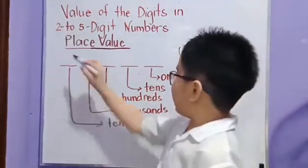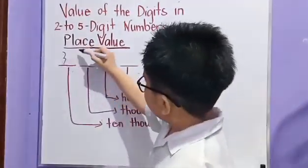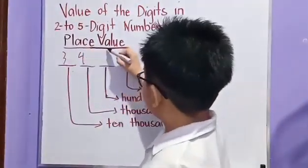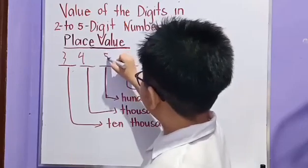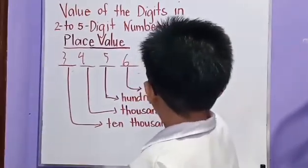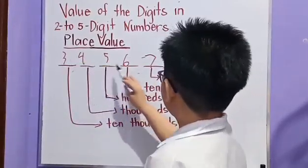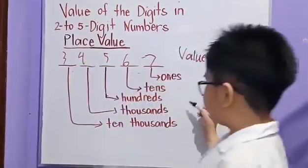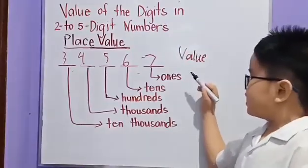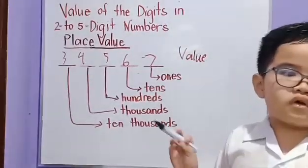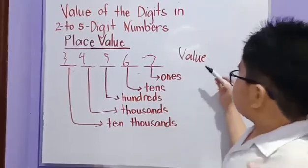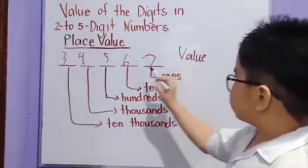What if we have 3, 4, 5, 6, 7? We have 34,567. Let us know the place value, the values of the digits.